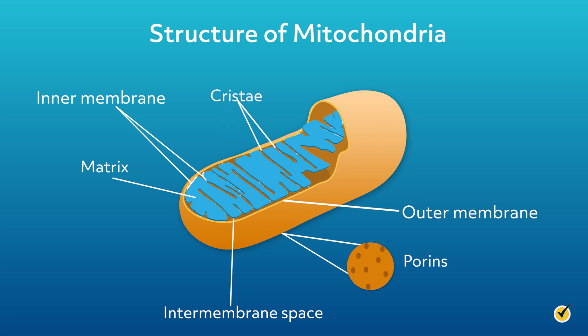We call the folds in the inner membrane cristae. We also find another unique feature of mitochondria here: mitochondrial DNA, or mtDNA. When we think about DNA we usually think about it being located in the nucleus, but mitochondria have their own DNA that codes for proteins specifically for the mitochondrion, like proteins that participate in the electron transport chain and ATP synthesis.